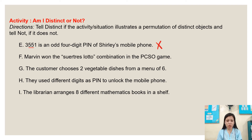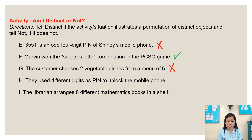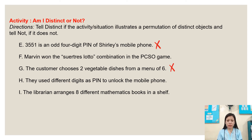Number seven: Marvin won the Swertres Lotto combination in the PCSO game. The answer is distinct. Number eight: the customer chooses two dishes from a menu of six. The answer is not distinct. Number nine: they use different digits as a PIN to unlock the mobile phone. Since different digits are used, the answer is distinct. Letter I: the librarian arranges eight different mathematics books on a shelf. This is also an example of distinct objects because of the eight different mathematics books.